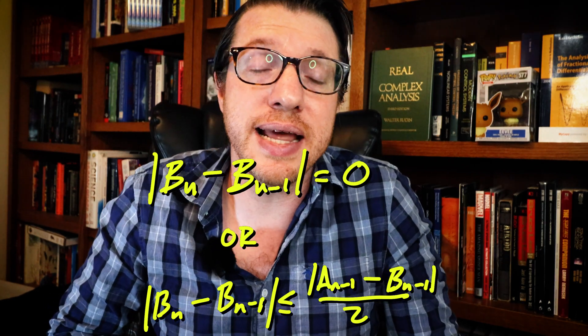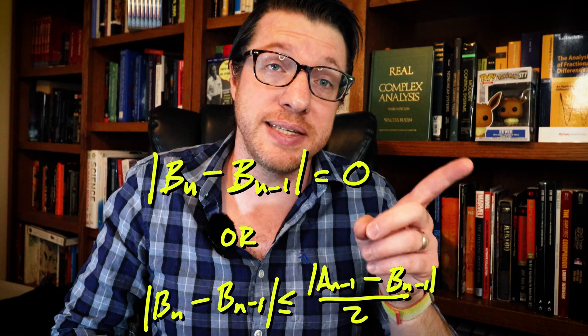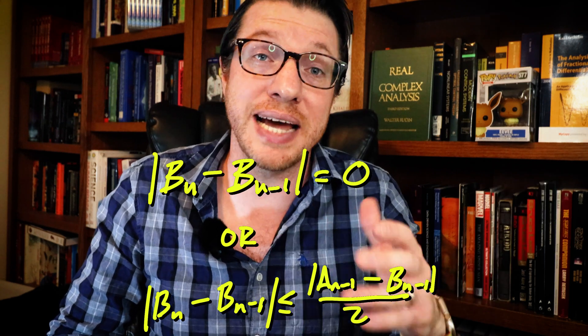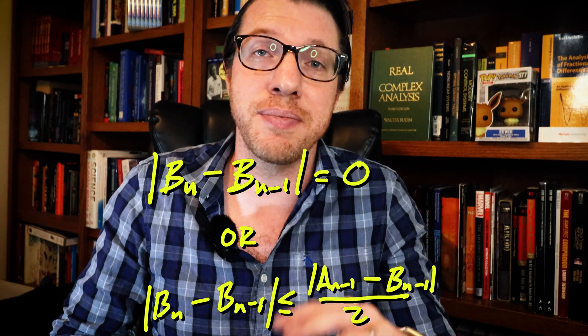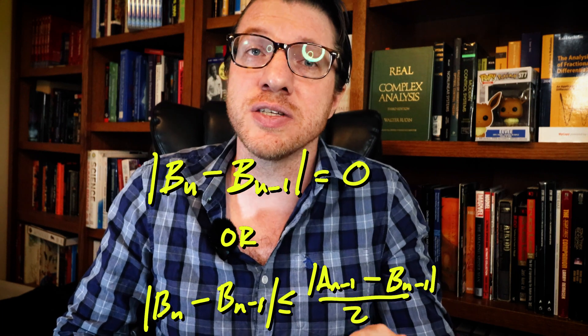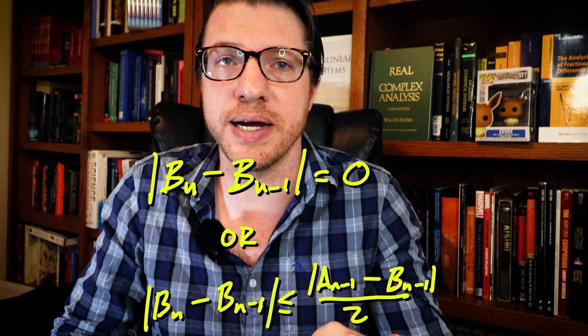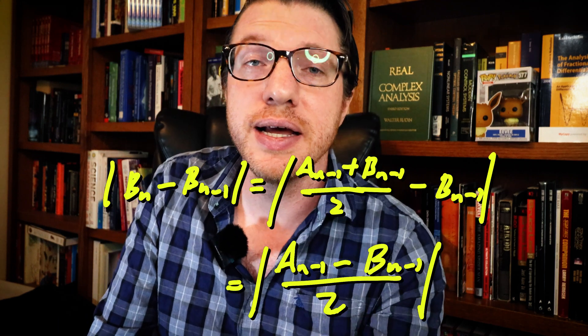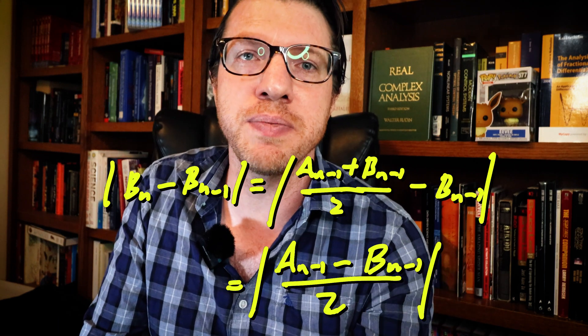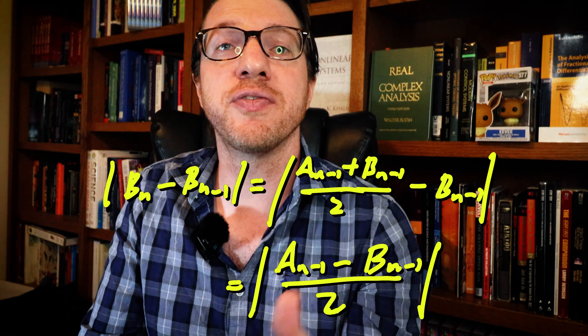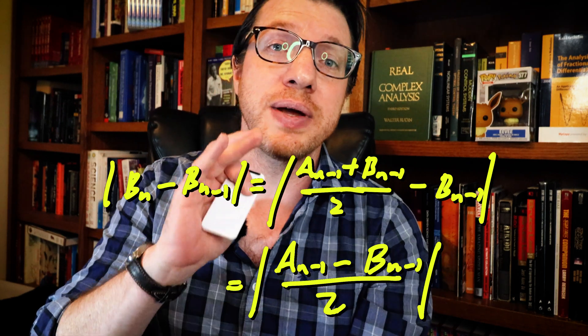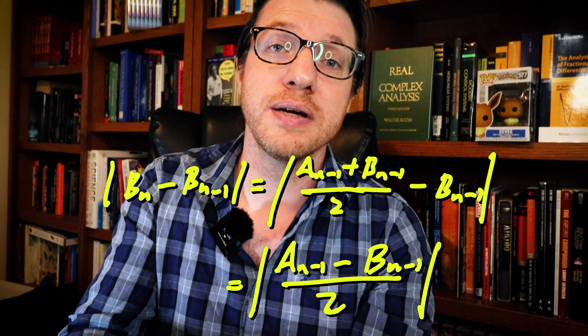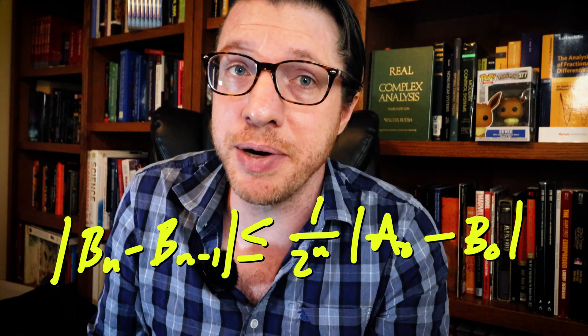The distance between bn and bn-1 is either going to be 0, if they are the same number, that is, a was replaced in that step and not b, or it is bounded by half the distance between an-1 and bn-1. We see that, since if bn was replaced by the average, the absolute value of the distance between bn and bn-1 simplifies like this. And we know that we can replace that difference by this because of our lemma.